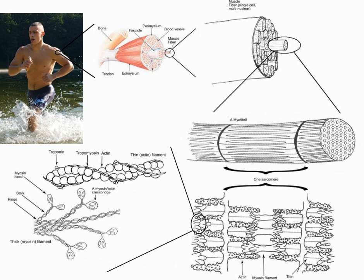All other muscles, including those of the limbs, are hypaxial and innervated by the ventral rami of the spinal nerves. During development, myoblasts either remain in the somite to form muscles associated with the vertebral column or migrate out into the body to form all other muscles. Myoblast migration is preceded by the formation of connective tissue frameworks, usually formed from the somatic lateral plate mesoderm. Myoblasts follow chemical signals to the appropriate locations, where they fuse into elongate skeletal muscle cells.